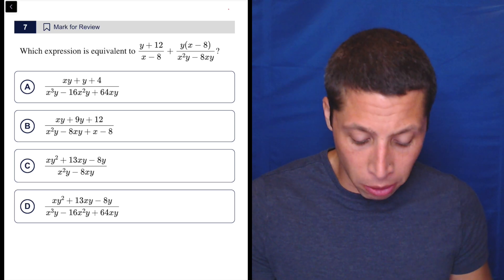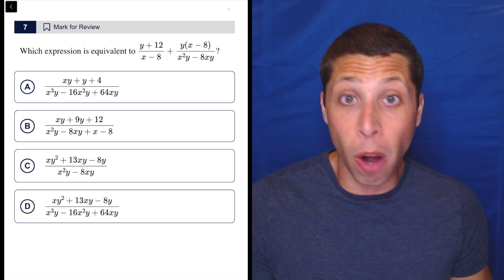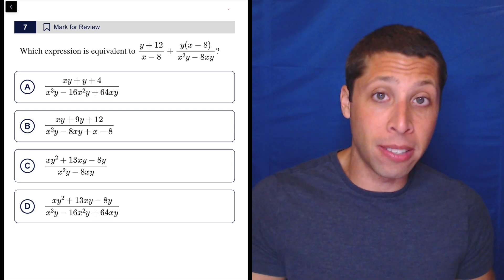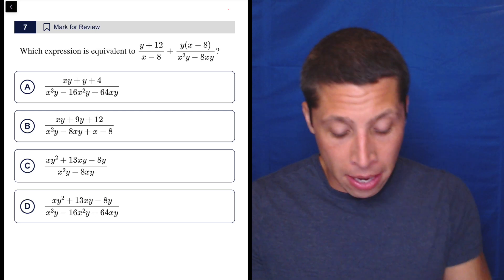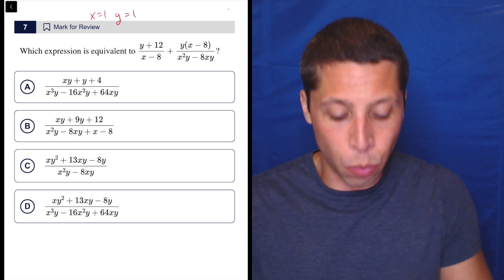I don't want to pick zero because I see there's a lot of X's and Y's in the denominators. They're all being multiplied. And I don't want to divide by zero. You can't have that happen. So I'm going to avoid that by making both X and Y equal to one.